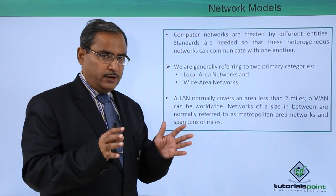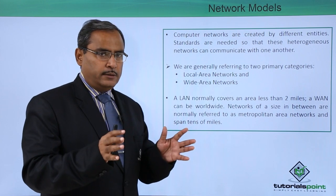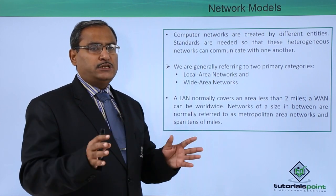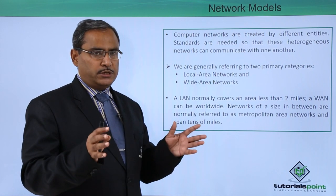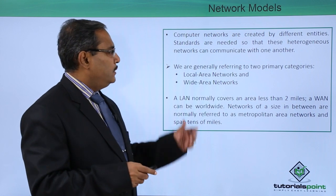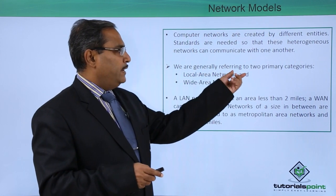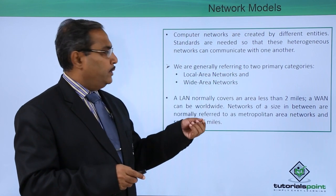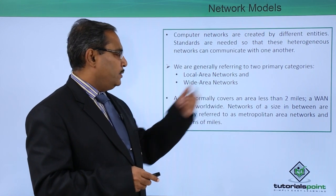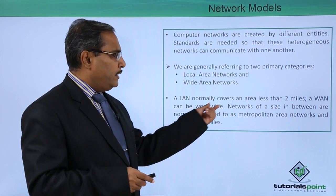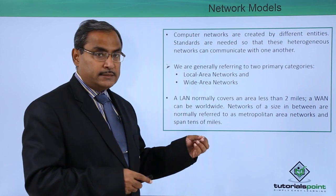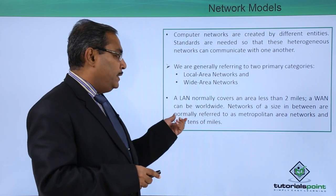We are considering the communication between the networks — not just between two nodes or computers, but between two networks. We generally refer to two main primary categories: Local Area Networks (LAN) and Wide Area Networks (WAN). A LAN normally covers an area less than 2 miles, while a WAN can be worldwide.